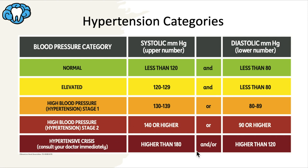Hypertensive crisis is where systolic is over 180 and/or diastolic is over 120. At this stage the patient would likely need changes in medication or immediate hospitalization if there are signs of organ damage. The diastolic reading is generally the more important one because it refers to when the heart is supposed to be relaxing, which is why the thresholds for diastolic are much more stringent. Compared to the old classification, these categories are overall more stringent with some thresholds lowered.